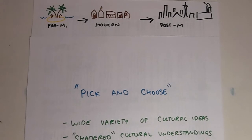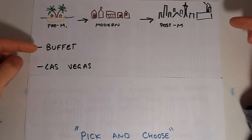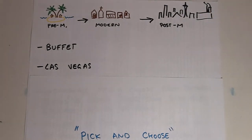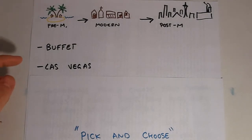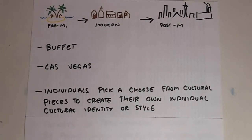Going back to this idea of culture being shattered, we can think of a postmodern society like Las Vegas, where you have a literal buffet of architectural styles — a pyramid, a space needle, buildings that look like castles — a tremendous collection of styles from all around the world and throughout history. In a postmodern society, there are so many different cultural elements that individuals don't belong so much to a culture as they create their own culture. Like walking down a buffet, I could take Chinese food, Mexican food, and Italian food to make my own custom meal. Individuals in postmodern cultures can pick and choose from cultural pieces to create their own individual cultural identity or personal style.